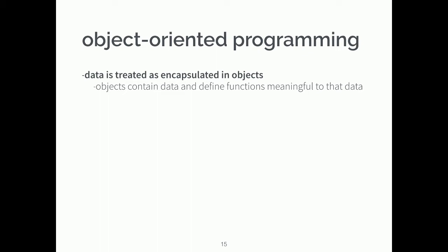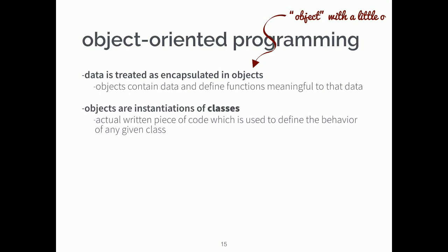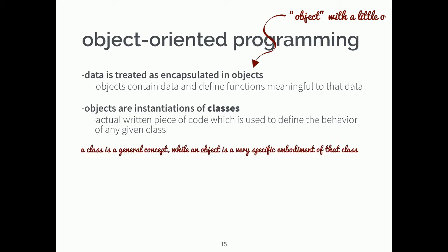Let's remind ourselves what we mean by object-oriented programming. In OOP, data is treated as encapsulated in objects — objects contain data and define functions that are meaningful to that data. I'm using the word 'object' with a lowercase o, not to be confused with Java's uppercase O Object, which we'll talk about shortly. Objects are instantiations of classes. A class is a general concept while an object is a specific embodiment of that class. By using objects and OOP, we can support modularity, code reuse, and better code design.